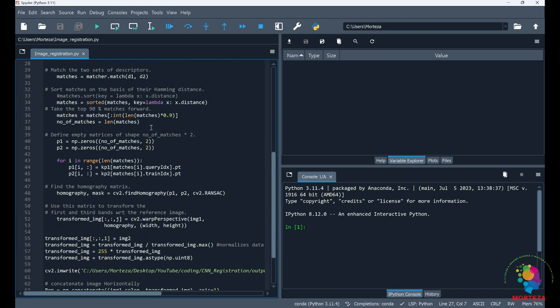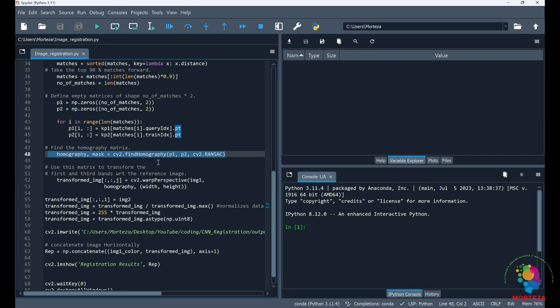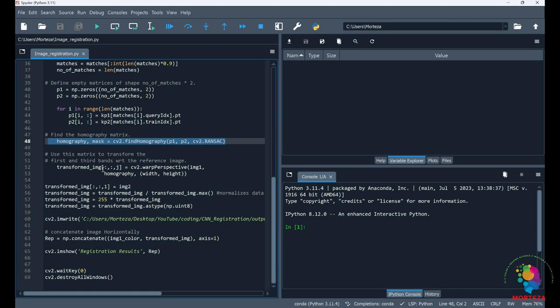And then this is where I use RANSAC to specify the outliers, and this is where I also fit the homography matrix. And then this is where I'm transforming the first and the third channel with respect to the second channel, and the same thing for the next channel.